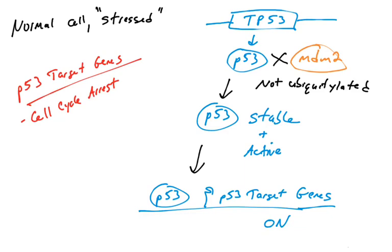Because if there's some sort of stress, we don't want to keep going through the cell cycle because the cell might not replicate properly into two identical daughter cells. So we'll see in later videos how p53 turns on cell cycle arrest genes and what those genes are.